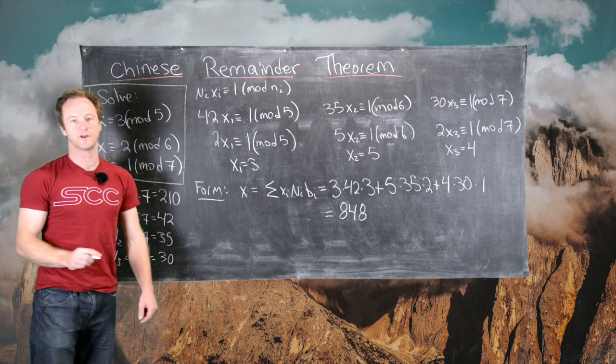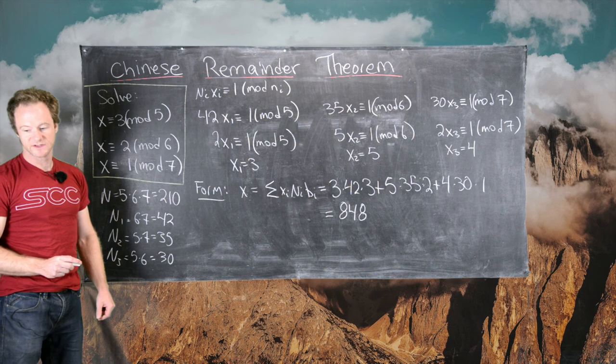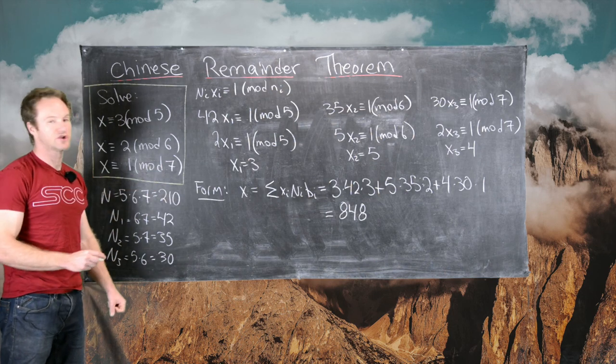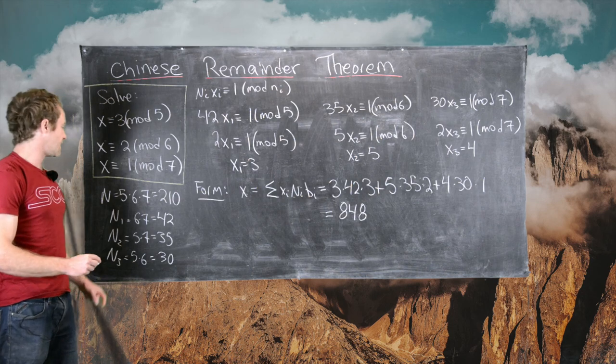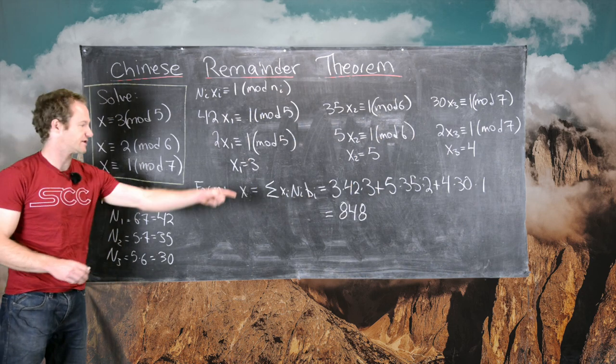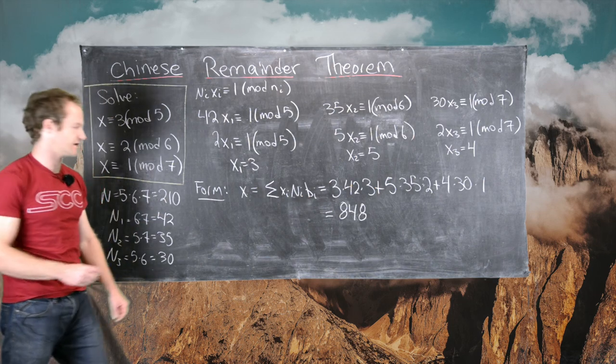So 848 is a solution to this system of linear congruences, but we know that this solution should be unique modulo capital N, and so modulo 210.